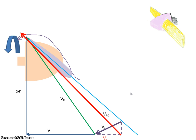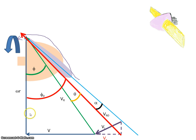Let's label the angles: call that phi, call that theta, call that phi0, which is phi plus theta. This is the angle of attack alpha, and this angle here, from the plane of rotation out to the chord line, will be beta, the blade angle.